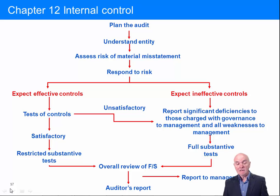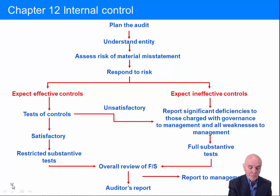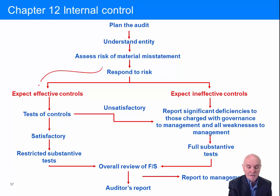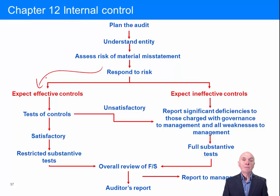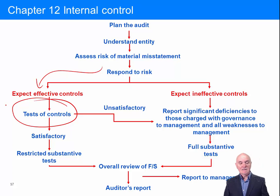Hopefully on our planning visit, or maybe because this is an old client that we know quite well, we have decided that the appropriate way to attempt this audit is to go down the left-hand route. We believe there's going to be effective controls. Things can go wrong within the client's accounting system, but with a really good internal control system that reduces the chance of errors, and if they do go wrong, the client has likely picked up and corrected those errors already. What we're going to do is rely on and test the system of internal control — and if it is satisfactory, our substantive tests can be kept small.